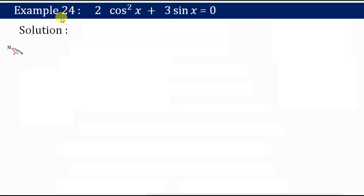Hello students. In this video we will discuss example 24 of the trigonometry chapter: 2cos²x + 3sinx = 0.